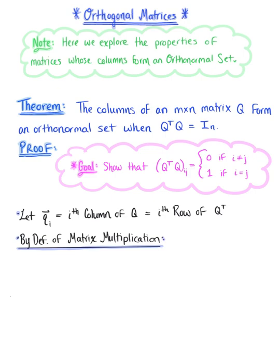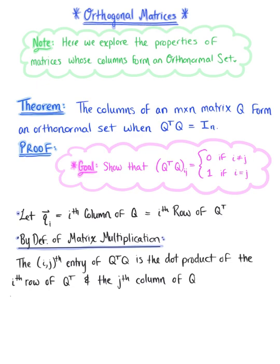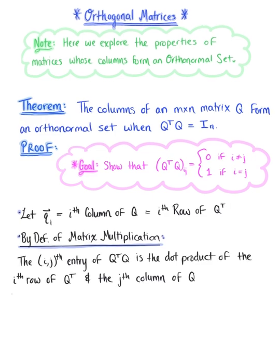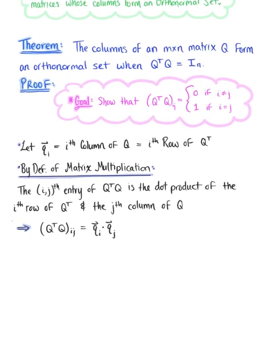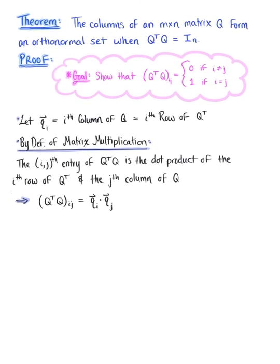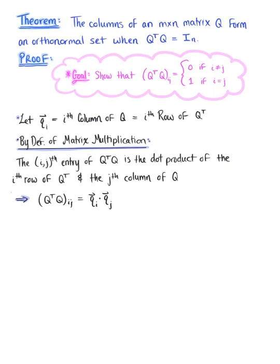By the definition of matrix multiplication, the i-th j-th entry of the product of the transpose of matrix Q with matrix Q is equal to the dot product of the i-th row of the transpose of matrix Q and the j-th column of matrix Q. So we can rewrite this as: the i-th j-th entry of Q^T times Q equals vector q sub i dotted with vector q sub j.